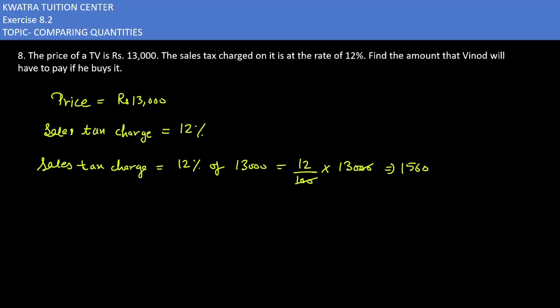So, how much is it? 1560. What will you add? What will you do? Sales price plus sales tax, and adding both of them you will get 13,000 plus 1560.